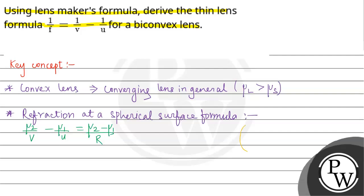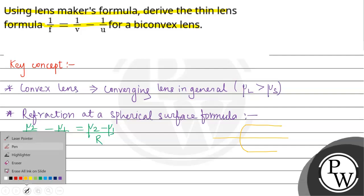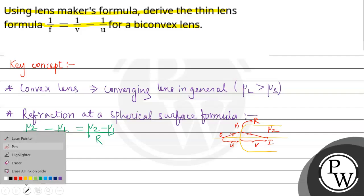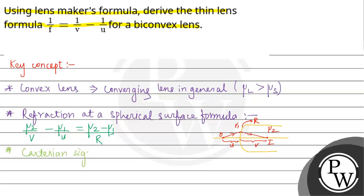And in this case, if we have a spherical surface, then this is the principle axis. Next point we have to remember that sign convention is very important, Cartesian sign convention will be taken into account.